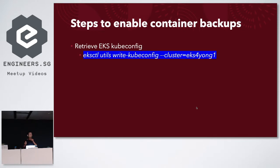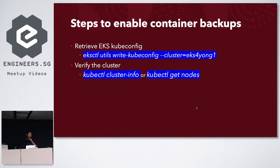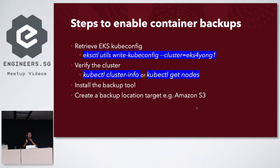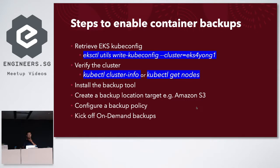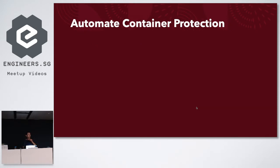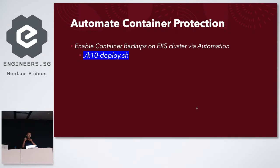Here are the manual steps to enable container backups: first, retrieve the EKS kubeconfig file to access the cluster; once you have access, verify the cluster is up and running; then install a backup tool — there are many free open source tools as well as commercial tools available. Once installed, you typically create a backup location target. Since you're running on Amazon, most likely you choose Amazon S3, but any S3-compatible storage works. Then create a backup policy based on your settings — how often to back up and where to send the data. You can schedule backup jobs automatically or run on-demand. These steps are not that straightforward, which is why I created the automation for container protection.